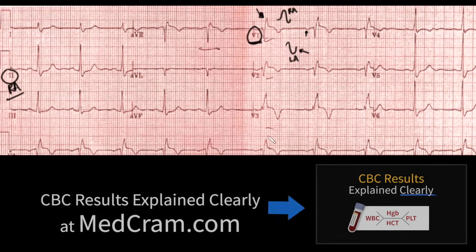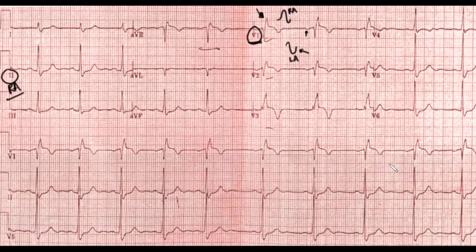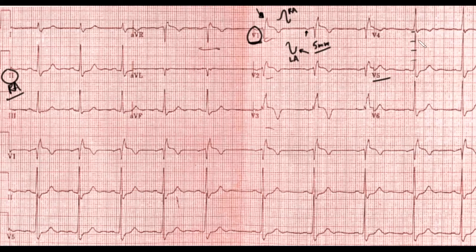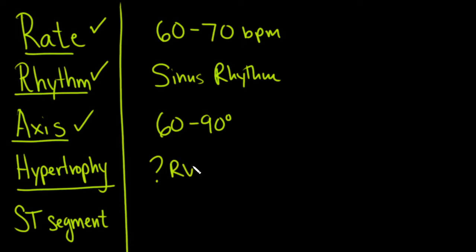It also looks like there may be a slight bundle branch block pattern. For left ventricular hypertrophy criteria, the S wave in V1 is about 5 millimeters and the R wave in V5 is about 20 millimeters, totaling 25. That's still below the threshold of 35 for LVH. So overall we have some questionable right ventricular hypertrophy.